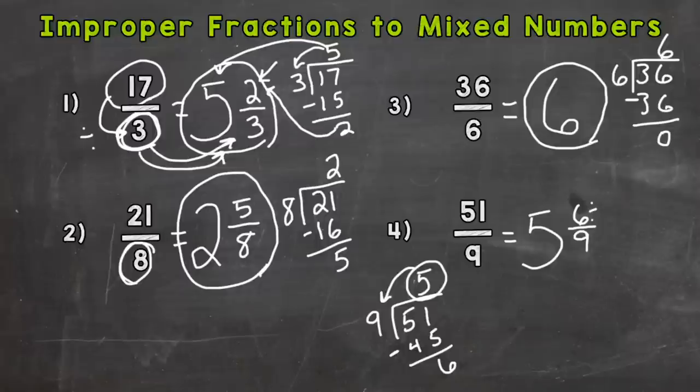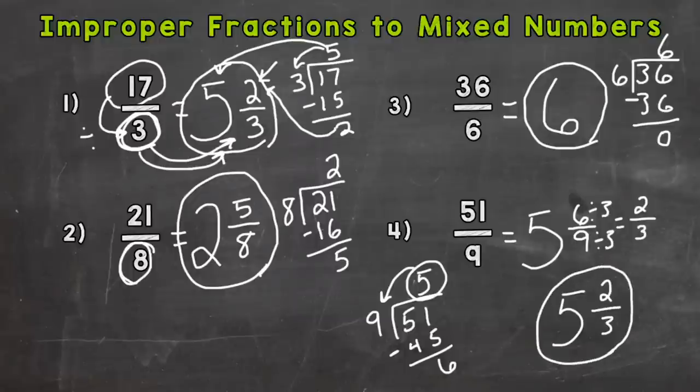So we can divide both the 6 and 9 by 3 to break it down. 6 divided by 3 is 2. And 9 divided by 3 is 3. So we can actually rewrite our answer as 5 and 2 thirds. We simplified the fractional part of the mixed number.